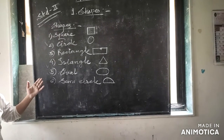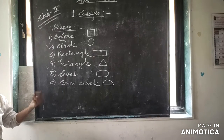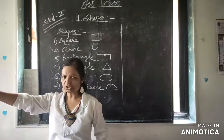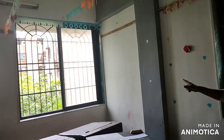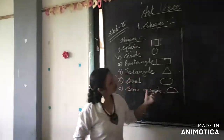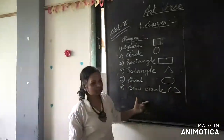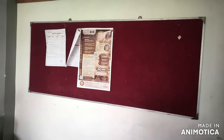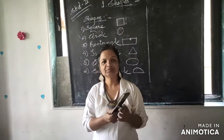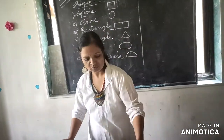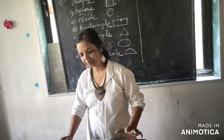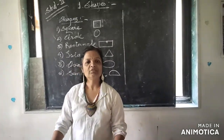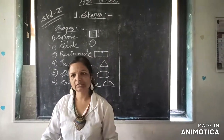Now find out where we get shapes surrounding us. Watch this window — it is in rectangular shape. This blackboard is also square shape, and this red board is in rectangular shape. My mobile is also in rectangular shape. This box is circular shape. Your book is also in rectangular shape. We will get different types of shapes around us.